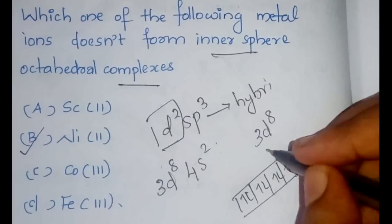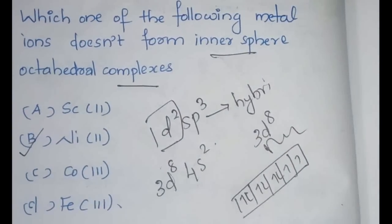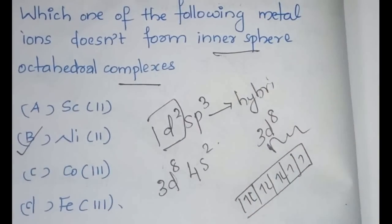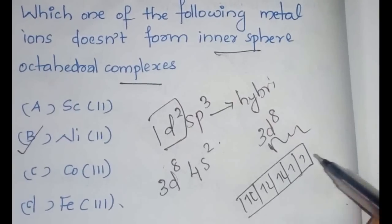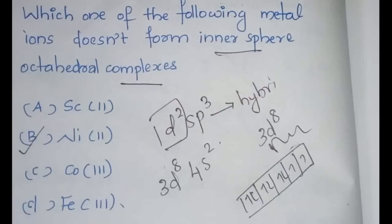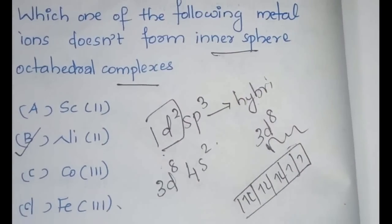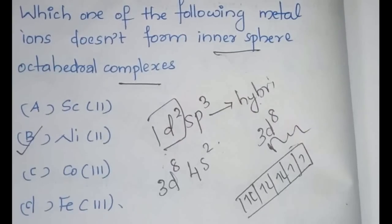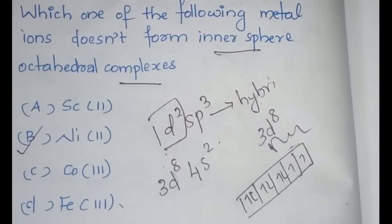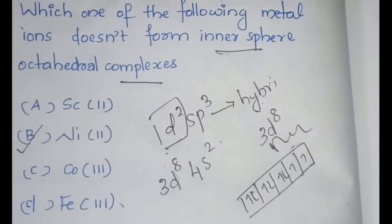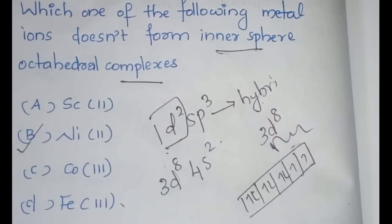In no way we are going to get 2 D orbitals to form the D2sp3 in any way. Even if we are forcing these two pairs also we will be getting only one D orbital. We will not get the 2 and therefore the hybridization D2sp3 is not possible and therefore nickel will not form the inner sphere octahedral complexes. Just remember that nickel will not form inner sphere octahedral complexes.